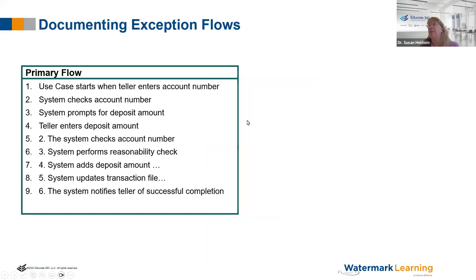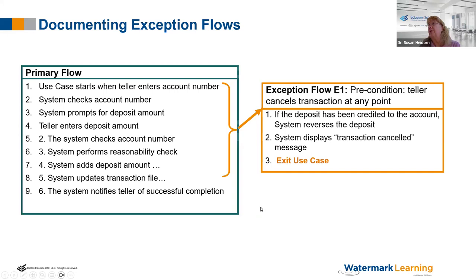Exception flows can happen anywhere in the system. Maybe you're making a deposit and change your mind — like ordering something online and seeing the final price with taxes and shipping and deciding to cancel. That cancellation takes you back to where you started. That's what exception flows are. There is no post condition reached — it just goes back to the starting point.